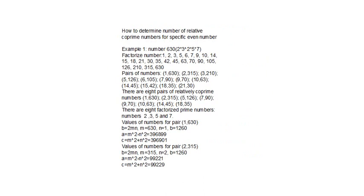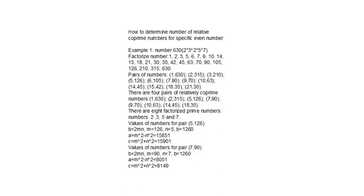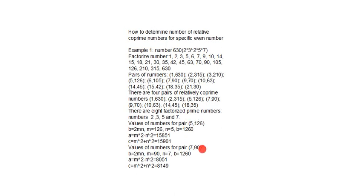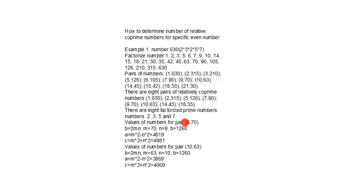Here is number 630, consisting of four different prime numbers this way. As you can see, it doesn't matter the power of the number; what matters is the number of prime numbers. Right here you can see: this is the first pair, second pair, third, fourth, fifth, sixth, seventh, and eighth pair.